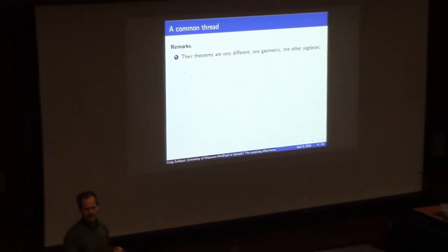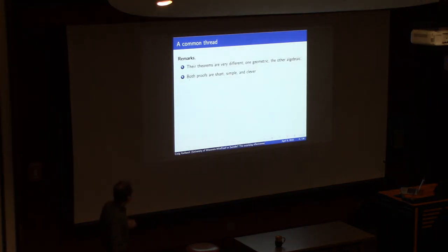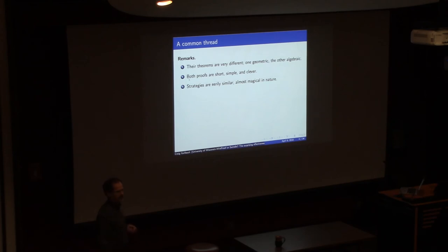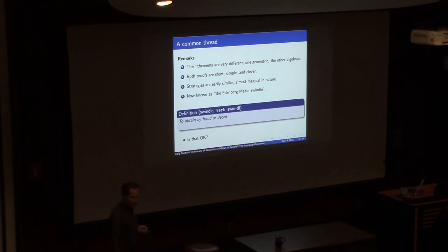A couple of remarks about why these guys get grouped together when the theorems are so different. The proofs are a little more similar — they're both very short, simple, and clever proofs. When I say simple, I mean they don't rely on a lot of external knowledge or machinery; they're just directly to the point. The strategies are eerily similar even though they're proving very different things. The technique is often referred to now as the Eilenberg-Mazur swindle. I looked at the definition of swindle: 'to obtain by fraud or deceit.' That's usually not what a mathematician wants associated with their name. So do we allow proofs obtained by a swindle? The answer will be that sometimes we do.